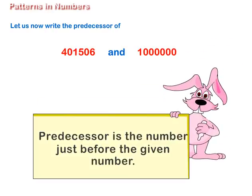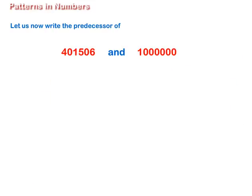Let us now write the predecessor of 40,01,506 and 10 lakh. Predecessor is the number just before the given number. So, the predecessor of 40,01,506 is 40,01,505. Similarly, the predecessor of 10 lakh is 9,99,999.